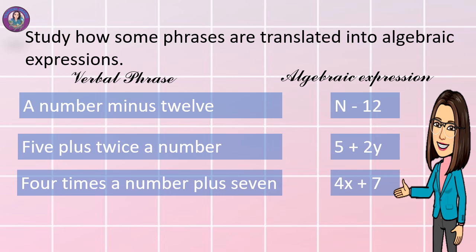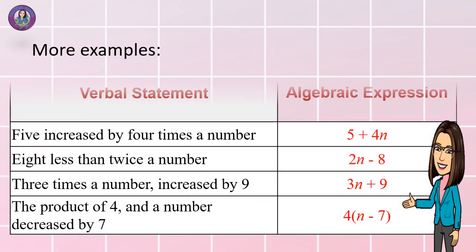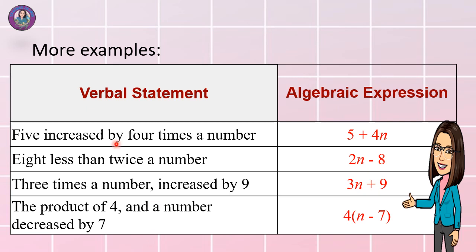You may use any variable when you say 'a number,' such as n, x, or y. For example: 5 increased by 4 times a number — in algebraic expressions, that is 5 plus 4n. Next: 8 less than twice a number — in algebraic expressions, that is 2n minus 8.